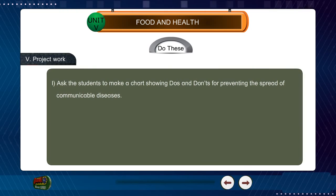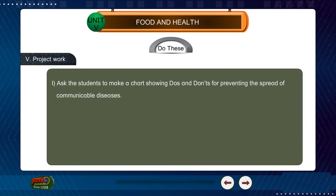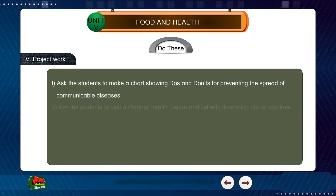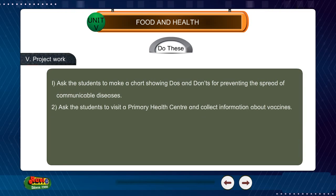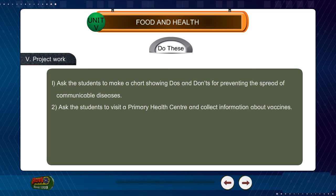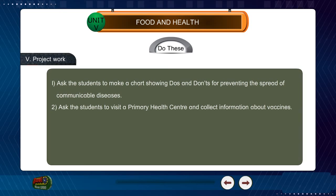Project work: 1. Ask the students to make a chart showing do's and don'ts for preventing the spread of communicable diseases. 2. Ask the students to visit a primary health center and collect information about vaccines.